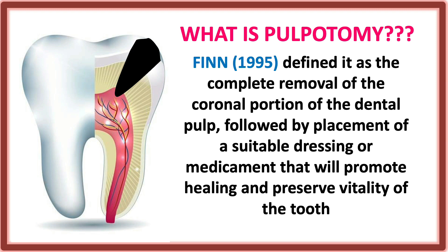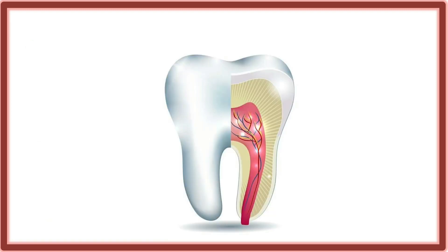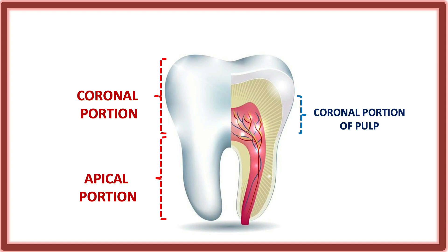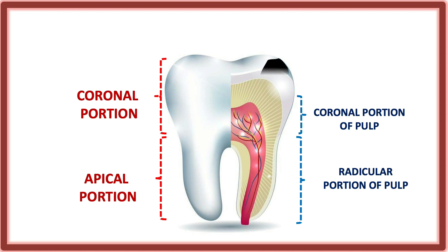Looking at the figure: the pulp present in the coronal portion is called the coronal portion of the pulp, and the pulp present in the apical or radicular portion is called the radicular portion of the pulp. In pulpotomy, we only remove the coronal portion of the pulp and then place the medicament — the pulp capping agent — while the radicular portion of the pulp remains.